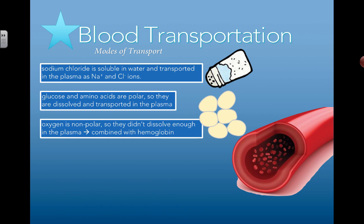What about some things that are non-polar? Oxygen molecules are non-polar, so they don't dissolve enough. So we actually have to combine them with a protein called hemoglobin, which you've heard of. And hemoglobin is actually found in the red blood cells. So oxygen attaches to the hemoglobin. So the red blood cells are specialized to help us to be able to transport oxygen around.